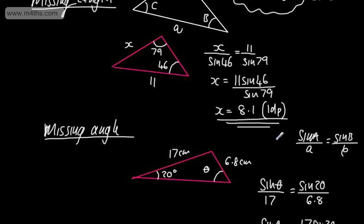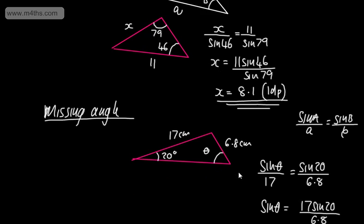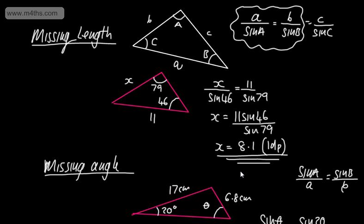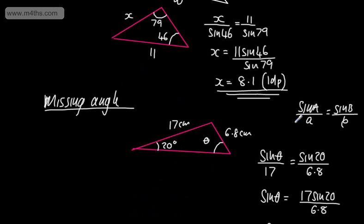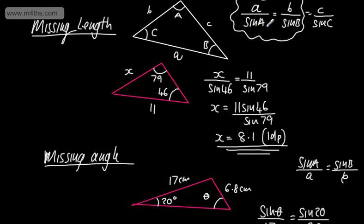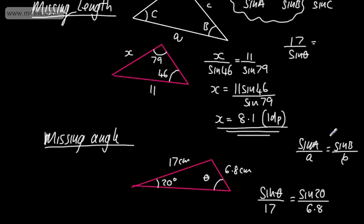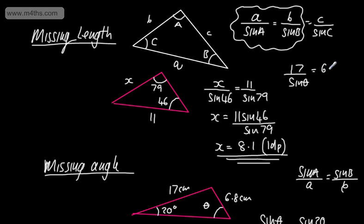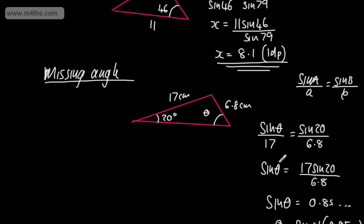In later videos we will look at the ambiguous sine rule, but hopefully that gives you some idea of how to find a missing length and a missing angle. You don't have to transpose the formula — you can just write it as A over sine A. I just think it's easier this way, because if we had it the other way, we'd have 17 over sine theta equals 6.8 over sine 20, and we'd need more manipulation to solve for sine theta.